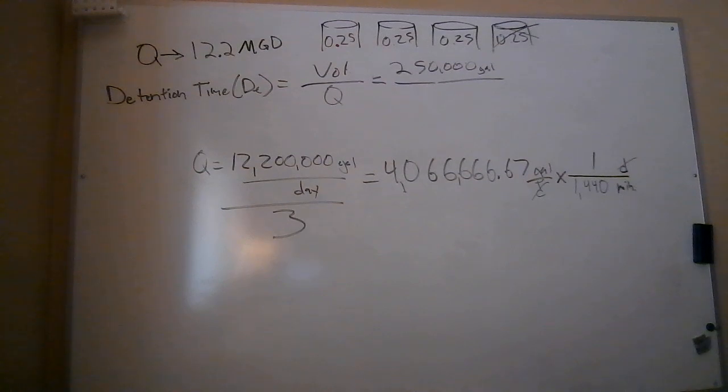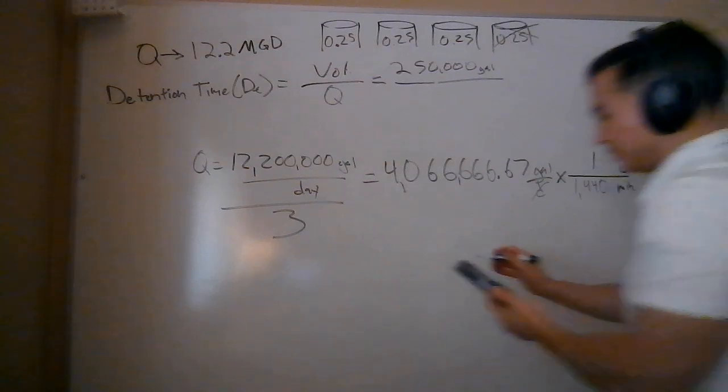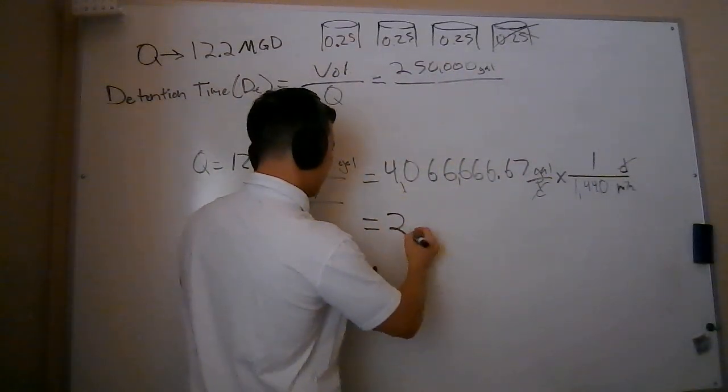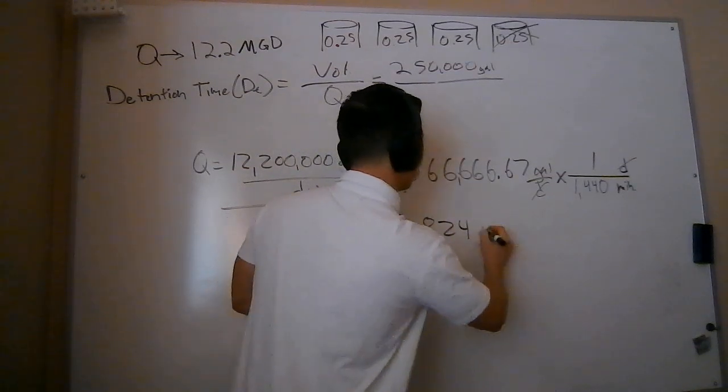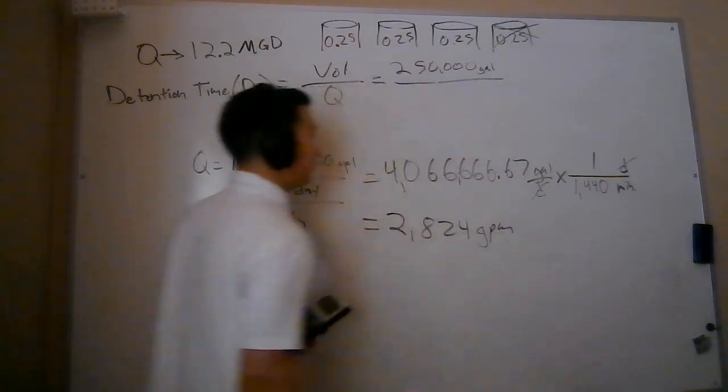So now I take the 4,066,000, I'm going to divide that by 1,440. And I'm going to get to a much more manageable number. Let's just say 2,824 gallons per minute or GPM.